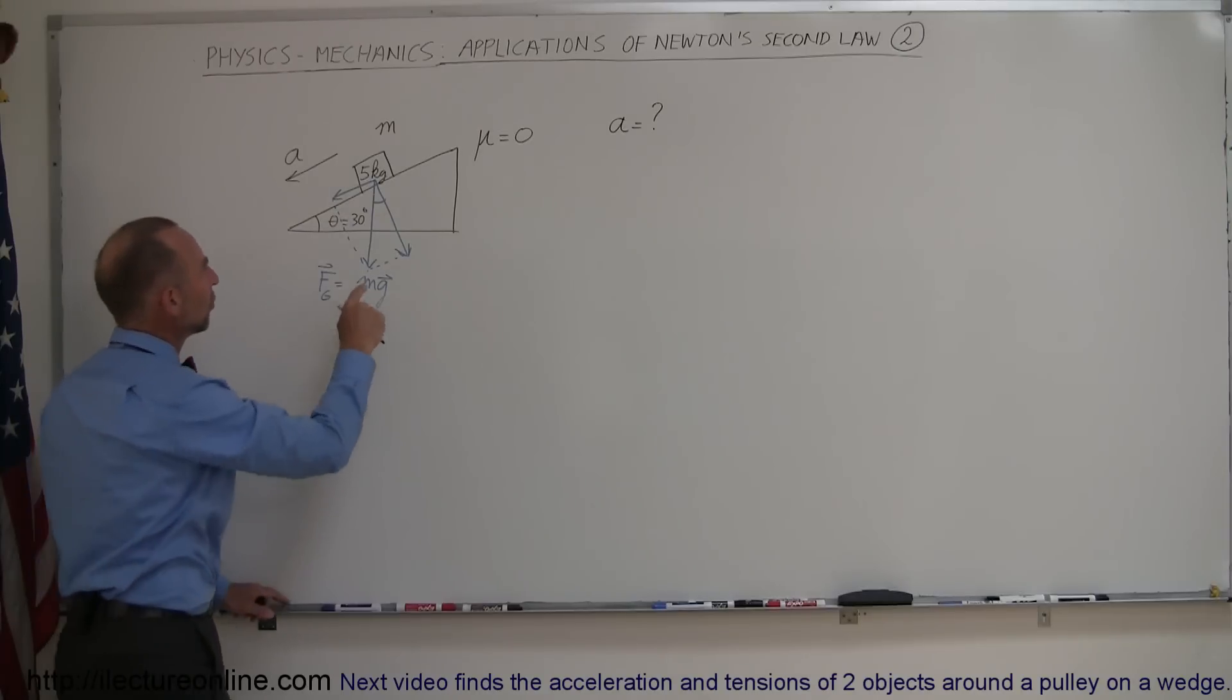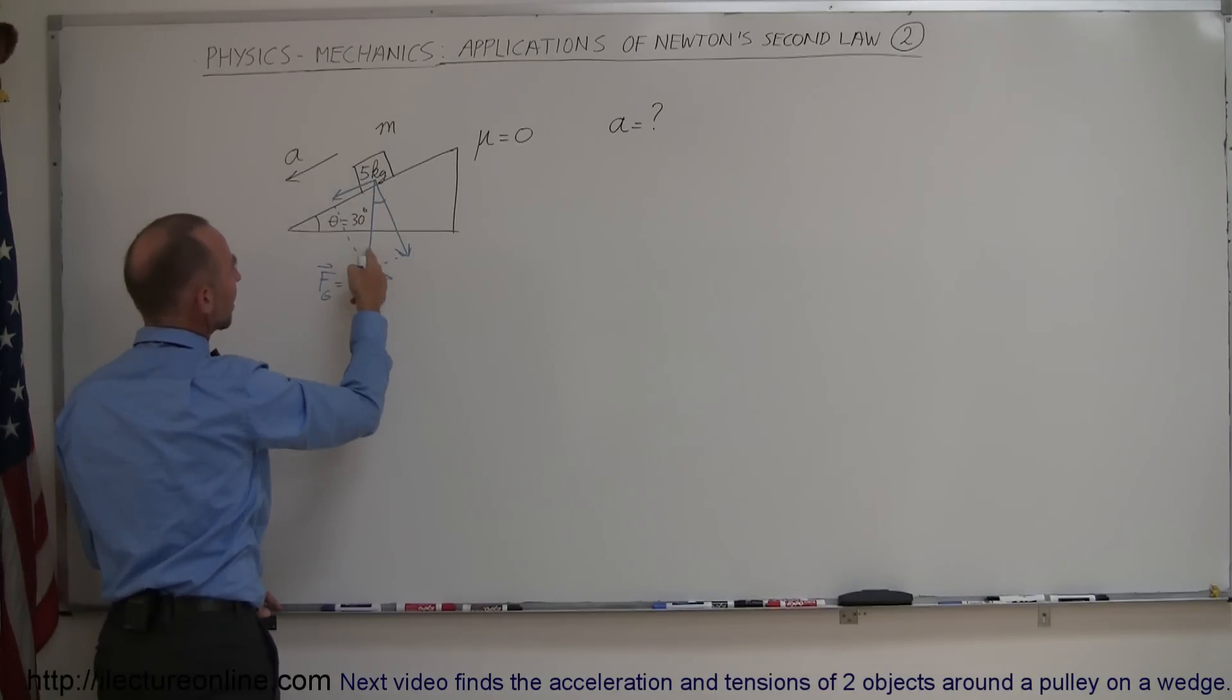Another way of looking at that is noticing that this line right here is perpendicular to this line, and this line right here is perpendicular to this line. So if those two are perpendicular to these two, that means the angle included must be the same. So this is theta.